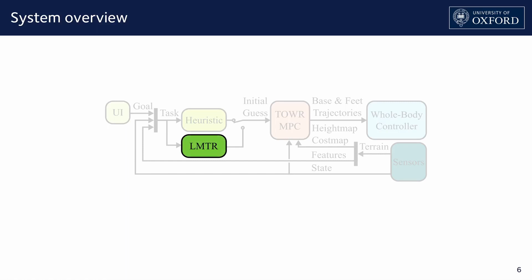The second is a neural network, LMTR, which leverages previous experience based on context to provide a near-optimal dynamic motion which requires little refinement thus reducing the computation time. The initializers are commanded by user input and integrate sensor information in the form of the estimated state and the 2.5D height map. Using the latter, we compute the cost map to penalize footholds and extract prominent terrain features.